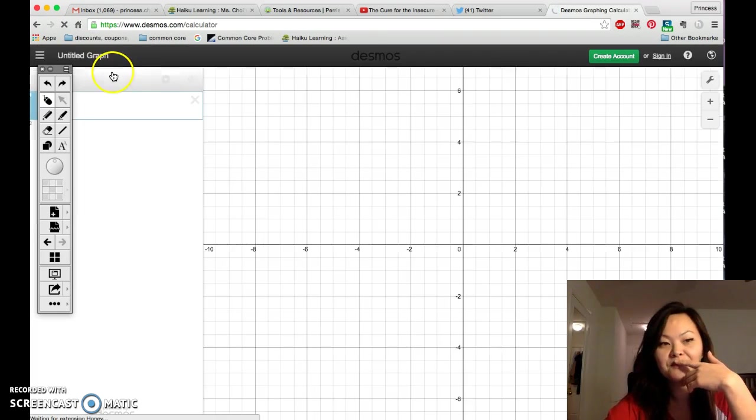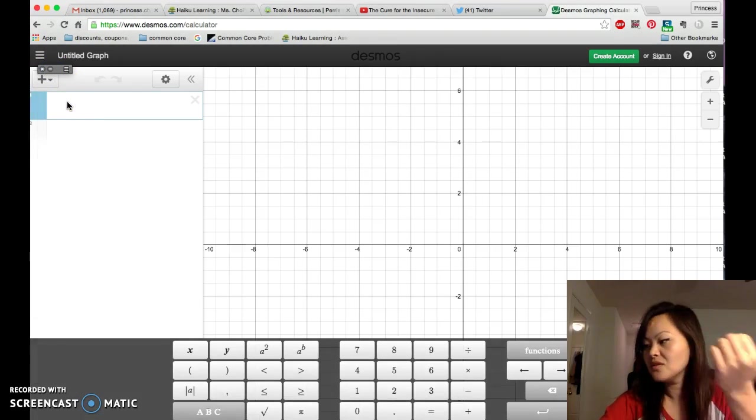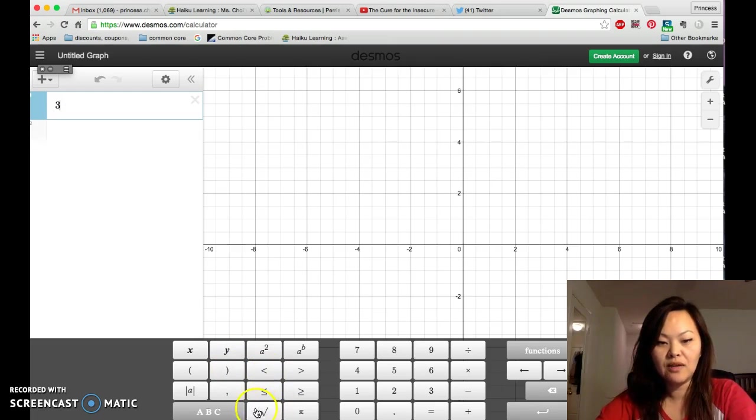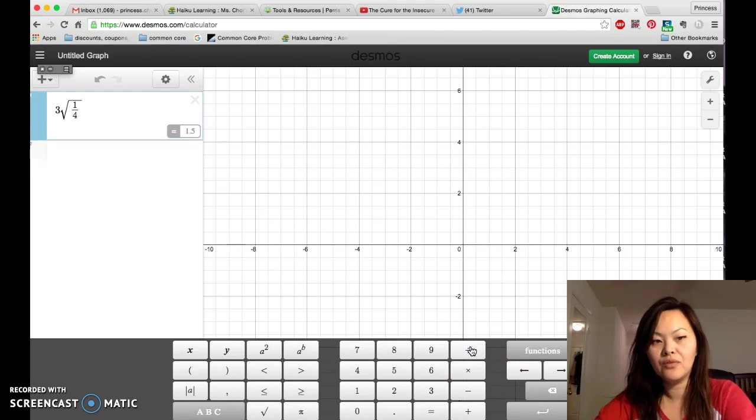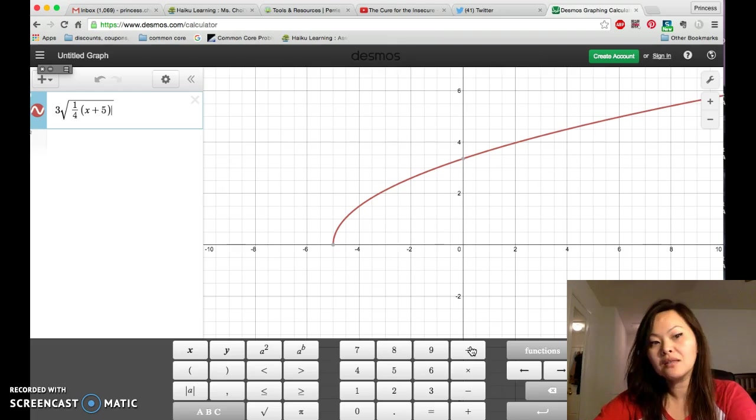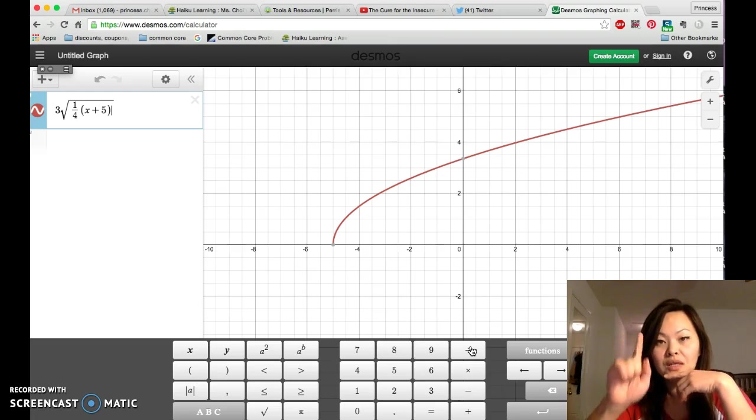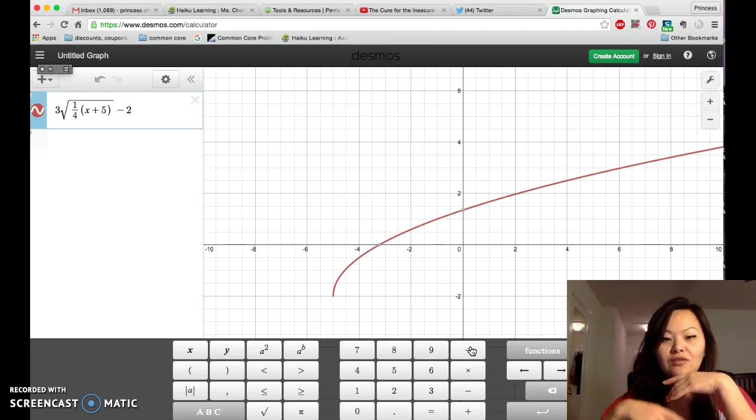So just start off with the three, and then the square root is this button right here. Let's not get confused. And then you click on 1, and for the fraction bar you click on the division symbol. Then you click on the arrow button to the right just once, and then open up your parentheses x plus 5, close your parentheses. And because the minus 2 has to be outside of the square root, you press the arrow button one time, the right side arrow button one time again, and then you put minus 2.